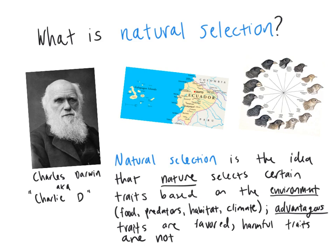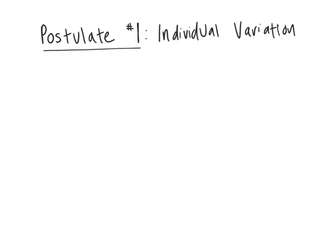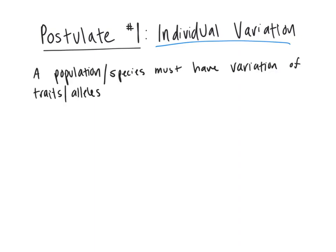Darwin came up with four postulates of natural selection. The first postulate is individual variation. This is the idea that a population or species has to have a variation of traits, meaning individuals have different genes from one another, in order to actually evolve by natural selection.